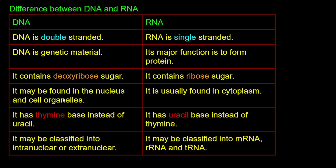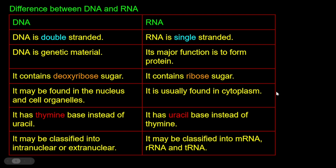DNA is usually found in the nucleus, associated with chromosomes. RNA is found in the cytoplasm. DNA has thymine, while RNA has uracil. DNA is intranuclear.